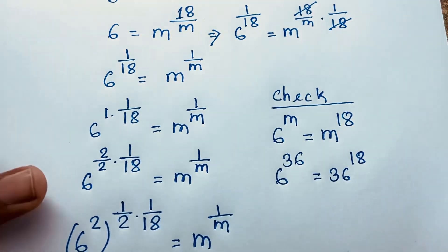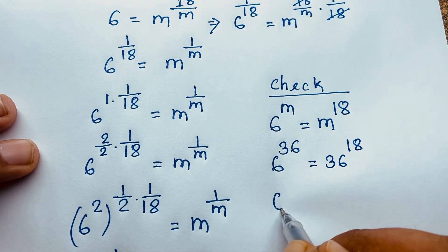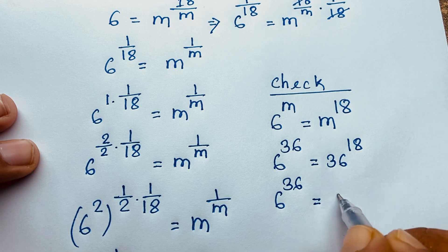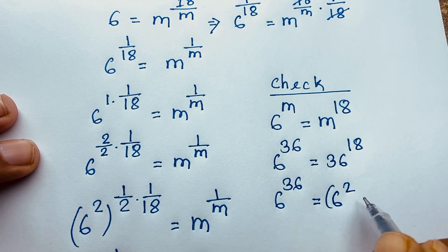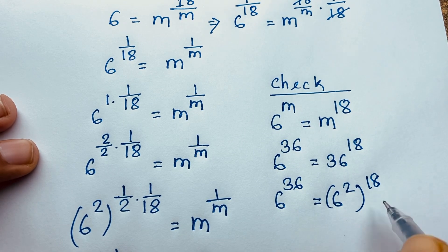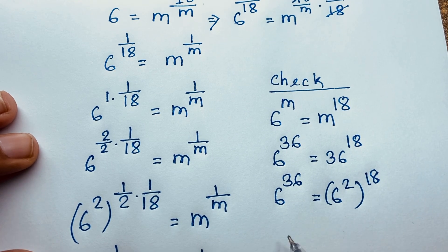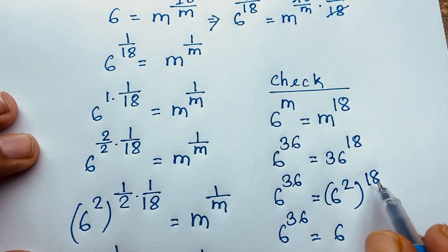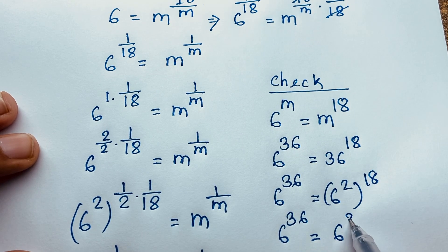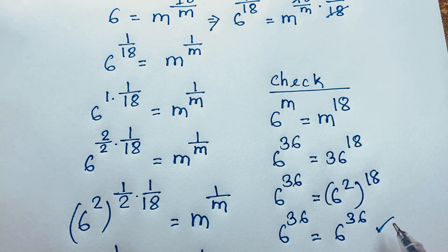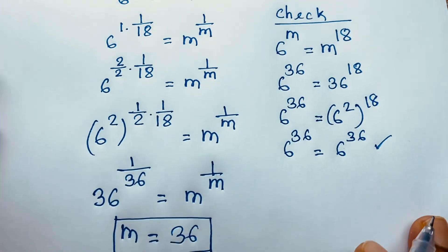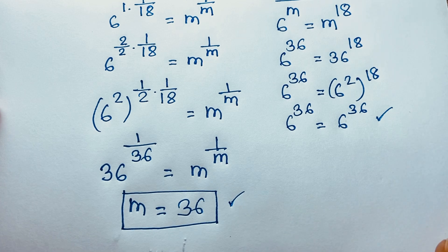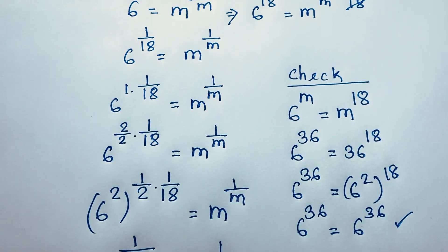You can see here: 6 to the power 36, and this 36 equals 6 to the power 2, in brackets to the power 18. So this is 6 to the power 36 is equal to 6 to the power 2 times 18, which equals 36. Left-hand side and right-hand side are both equal. So you can see that m is equal to 36. This is our final answer.